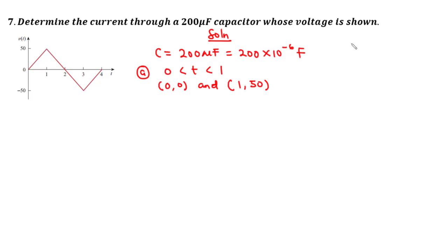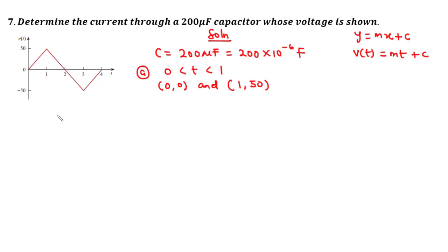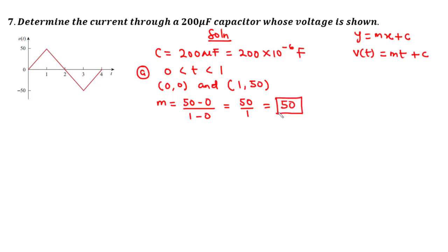Because this is a straight line, we use the equation y = mx + c, where y is V(t), m is the gradient, and x is t, and c is the y-intercept. The gradient m equals (y2 - y1) / (x2 - x1) = (50 - 0) / (1 - 0) = 50 divided by 1, which equals 50.